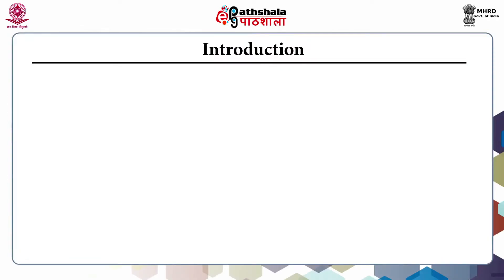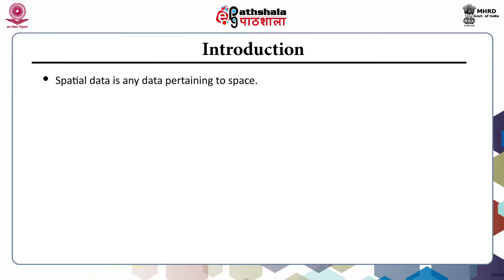Let's start with the introduction. A model is a gross simplification of the real world. Spatial data is any data pertaining to space. Spatial data is stored in either a raster data model or a vector data model. The vector data model uses points, lines and polygons to represent the real world.